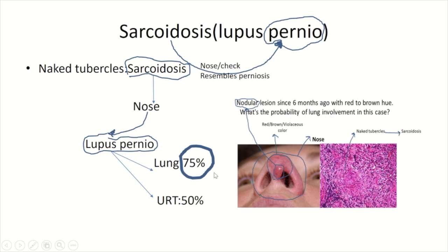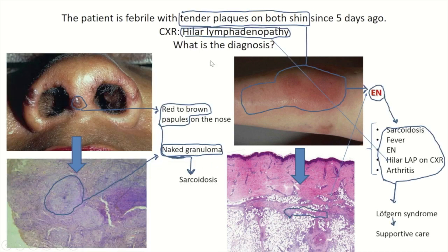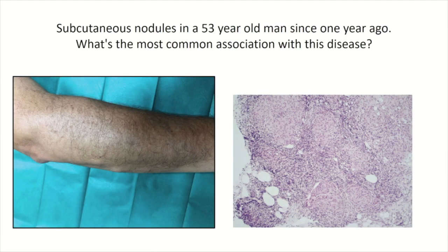A febrile patient presents with tender plaques on both shins since five days ago, and chest X-ray shows hilar lymphadenopathy. Histopathology of the nose shows a naked granuloma indicative of sarcoidosis, and the skin biopsy of the shins shows septal panniculitis indicative of erythema nodosum. The combination of sarcoidosis, fever, erythema nodosum, hilar lymphadenopathy, and arthritis constitutes Löfgren syndrome, which is mainly treated with supportive care, though corticosteroids may be administered in some cases.